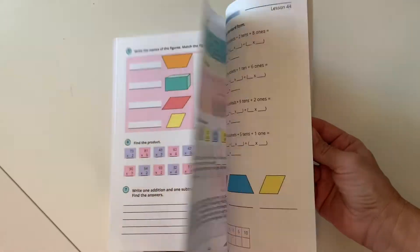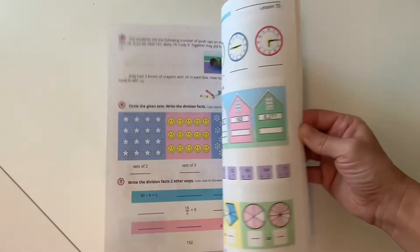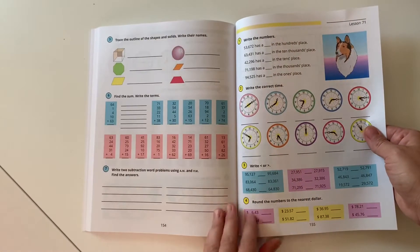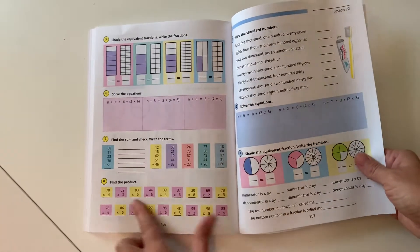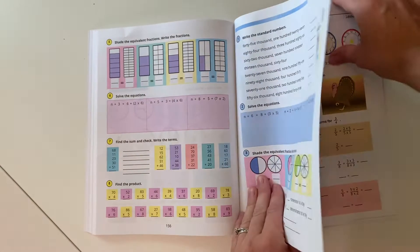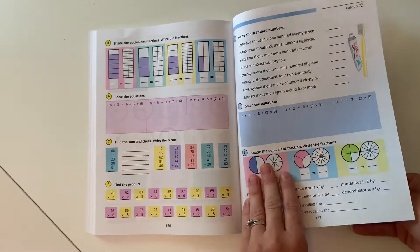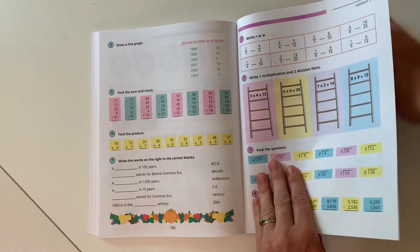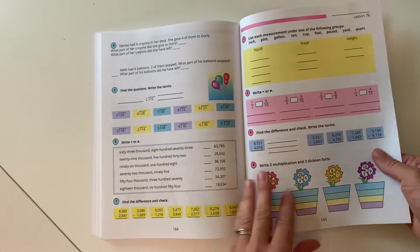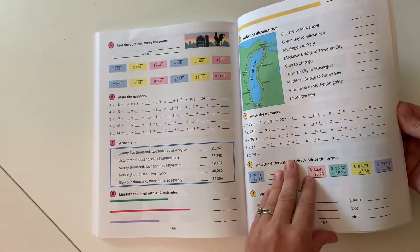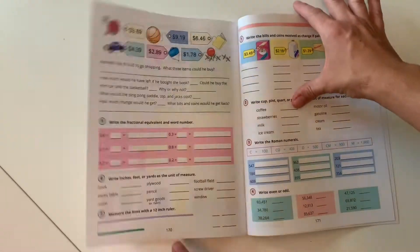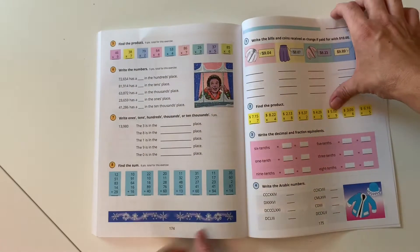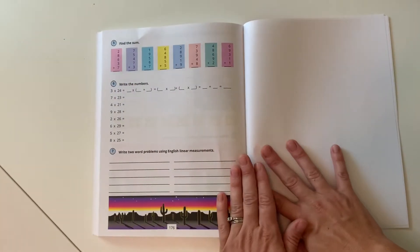Let's just kind of go quickly towards the end and look at the last 10 lessons, equivalent fractions or multiplying two digit numbers here. Once again, these multi-step algebraic equations. Here we have division. There are some mapping activities. Here's multiplying three digit numbers. And that is the end of book one.